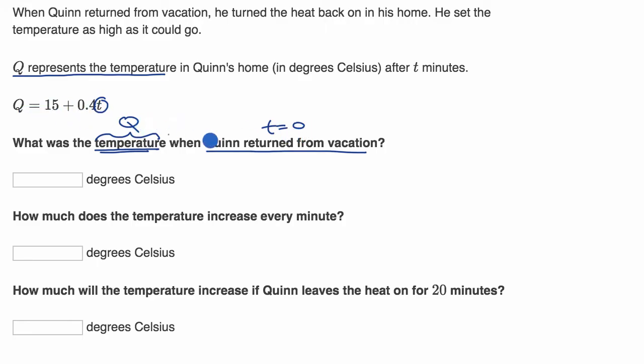Well, if you go back to this original equation, we see that Q is equal to 15 plus 0.4 times the elapsed time in minutes, so that's times zero. So that's just going to be 15 degrees Celsius.